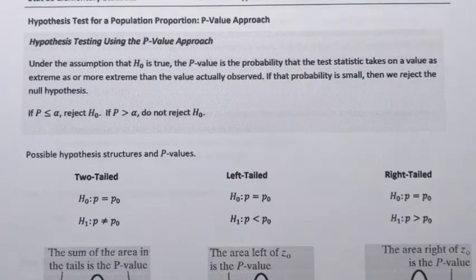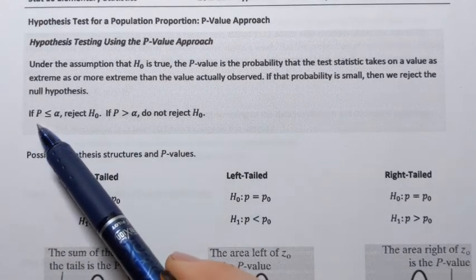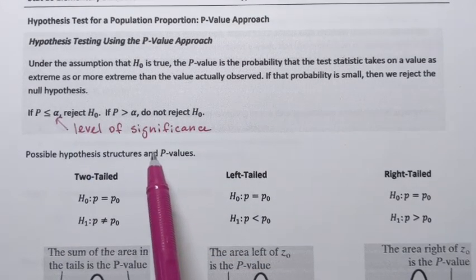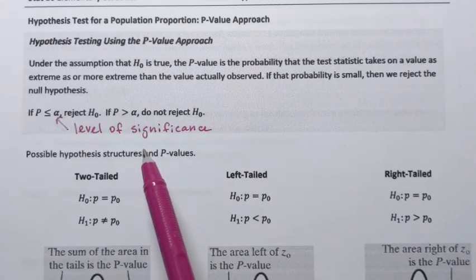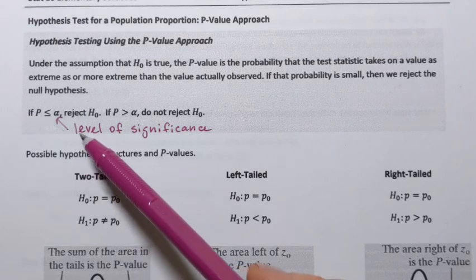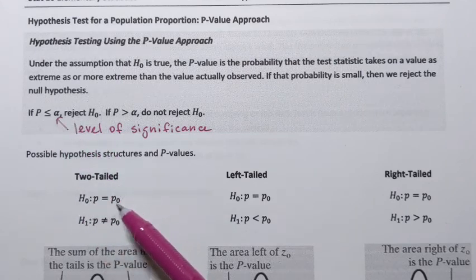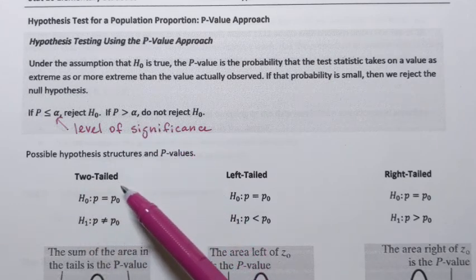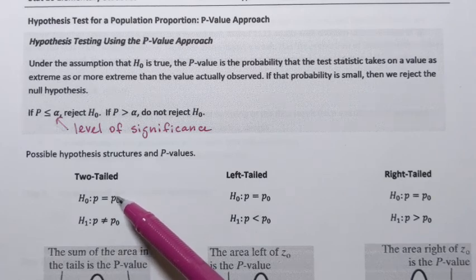How do we decide the p-value is small enough to reject the null hypothesis? We compare the p-value with alpha. Alpha is called the level of significance and it is chosen before the sample data are collected. It represents the probability of making a type 1 error — that is, the probability of rejecting the null hypothesis when it is actually true. If the p-value is less than or equal to alpha, we reject the null hypothesis. If the p-value is greater than alpha, we do not reject the null hypothesis. We never say the null hypothesis is true; we either reject it or do not reject it, since we never know what the reality is.